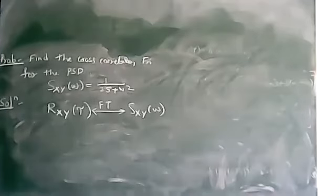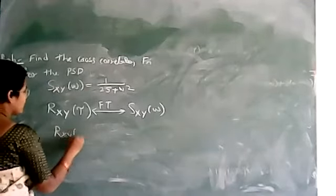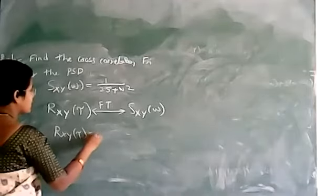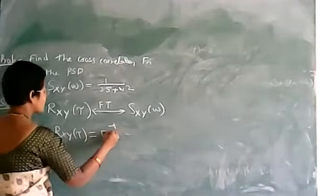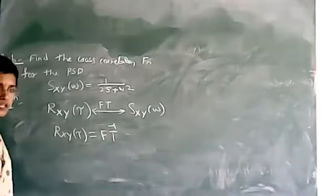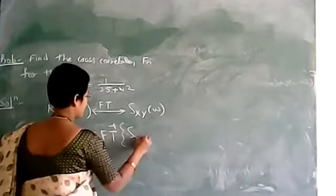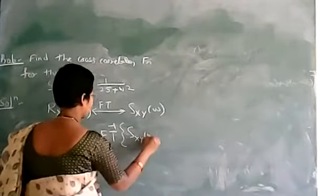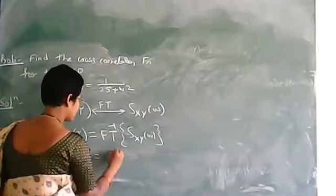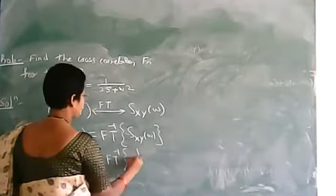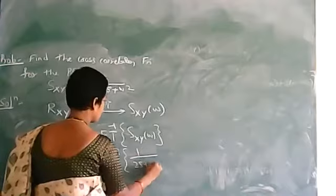So what is R_xy of tau? R_xy of tau will be equal to the inverse Fourier transform of S_xy of omega, which is the inverse Fourier transform of 1 by 25 plus omega squared.